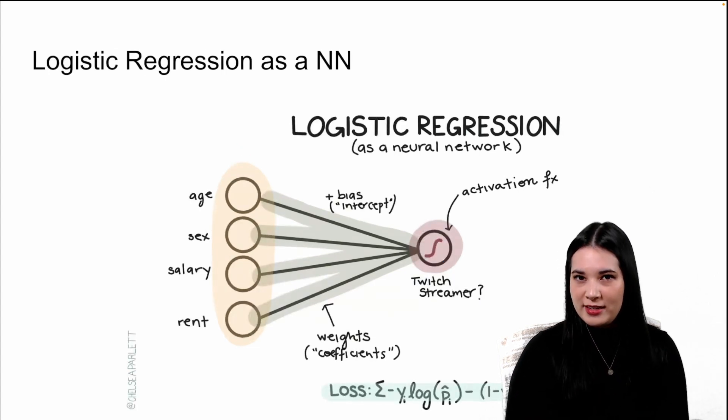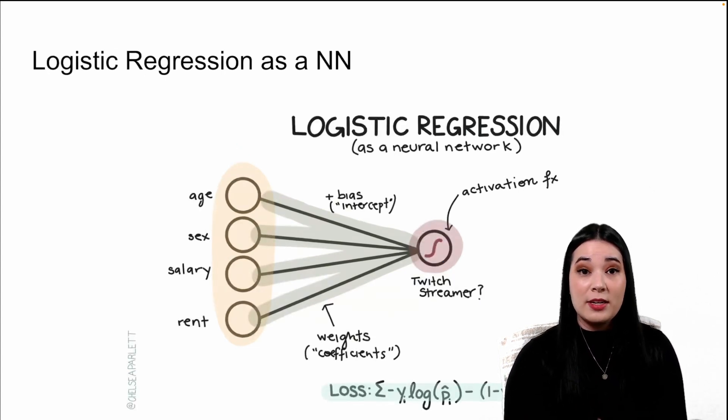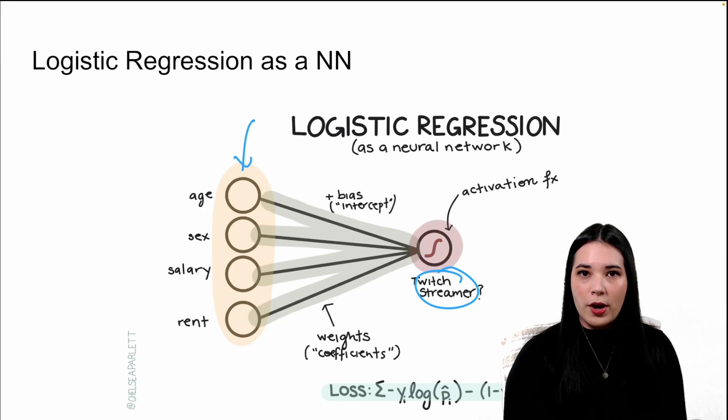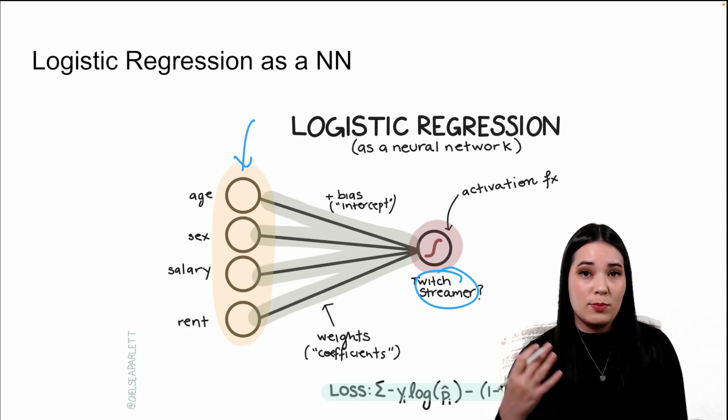However, if we change the activation a little bit to be a sigmoid activation, we get a logistic regression. Here we have the same input values, but instead of predicting video game spending, we're predicting whether or not someone is a Twitch streamer. Our input values of age, sex, salary, and rent are multiplied by their weights, a bias is added, but then that value is sent through a sigmoid activation to get an outputted predicted probability.